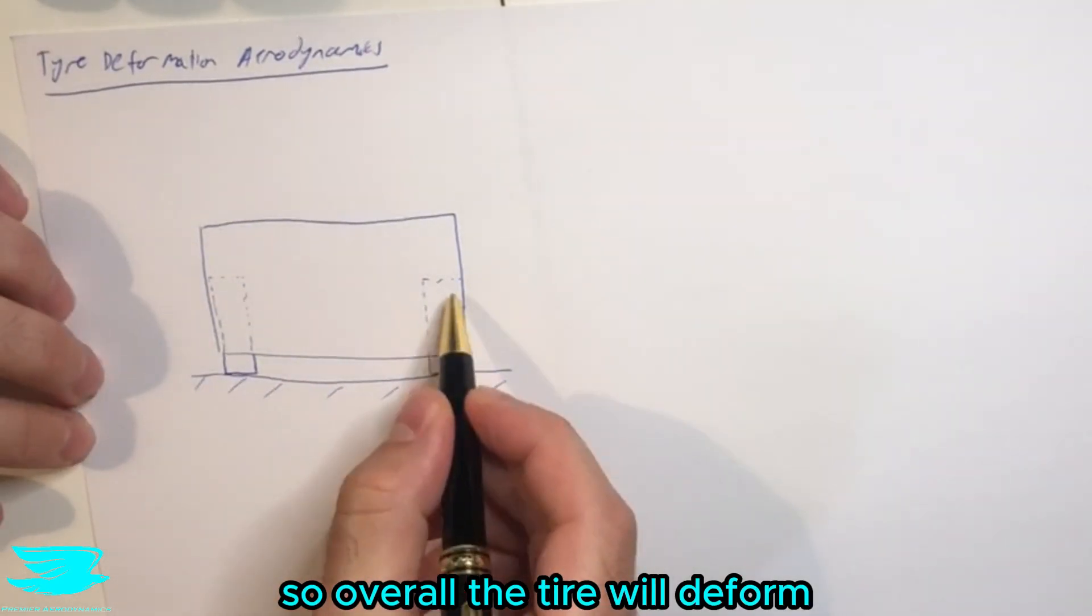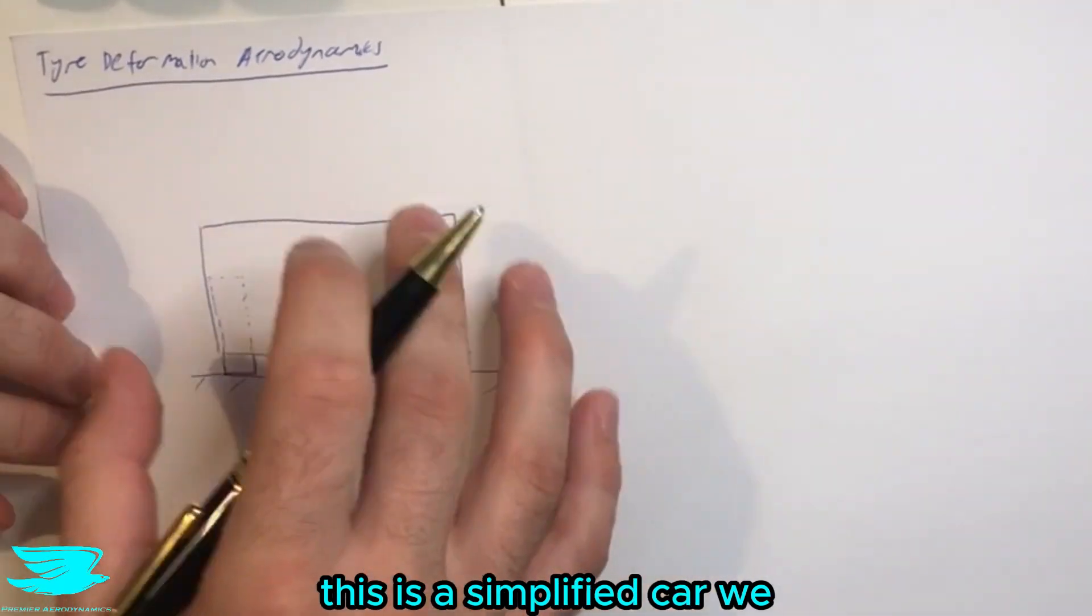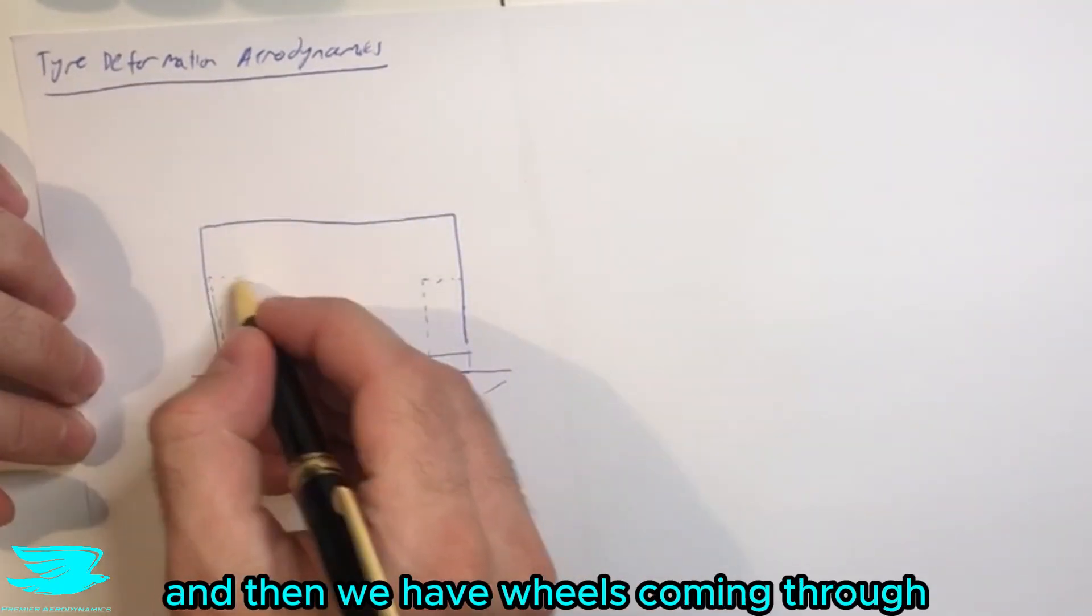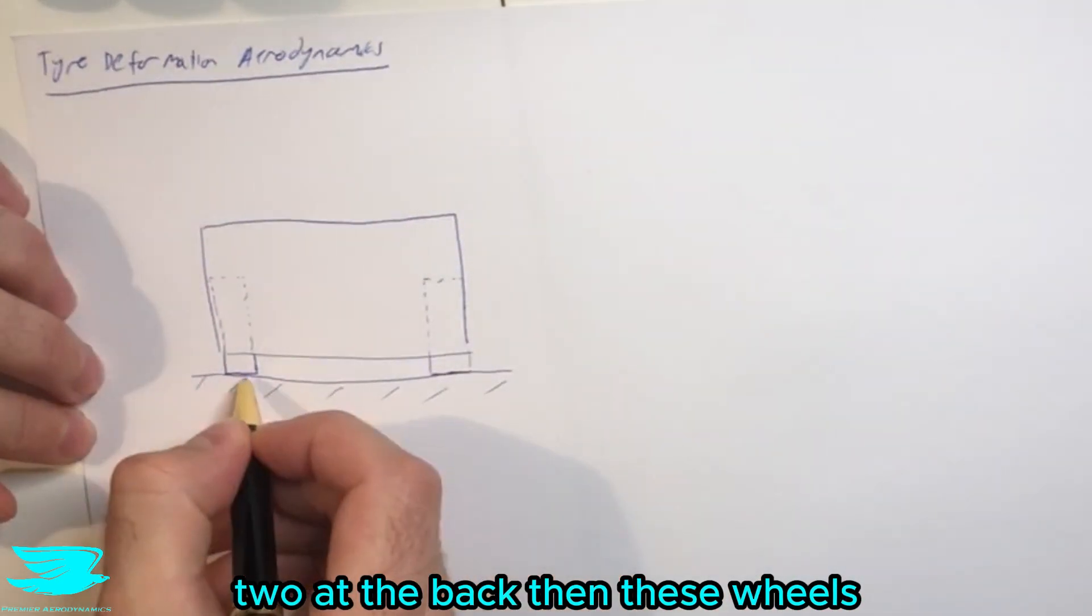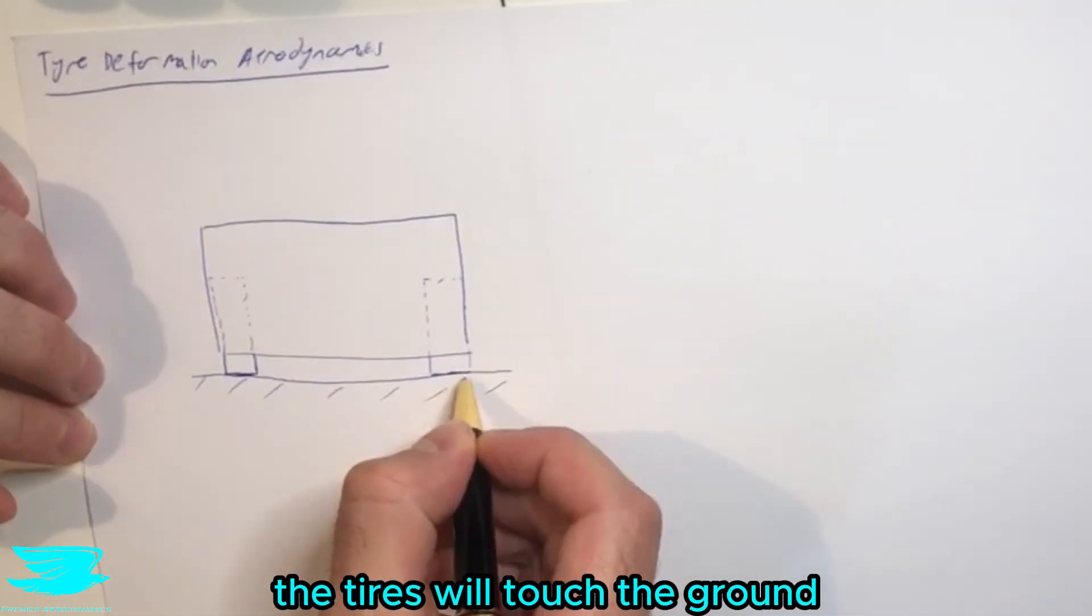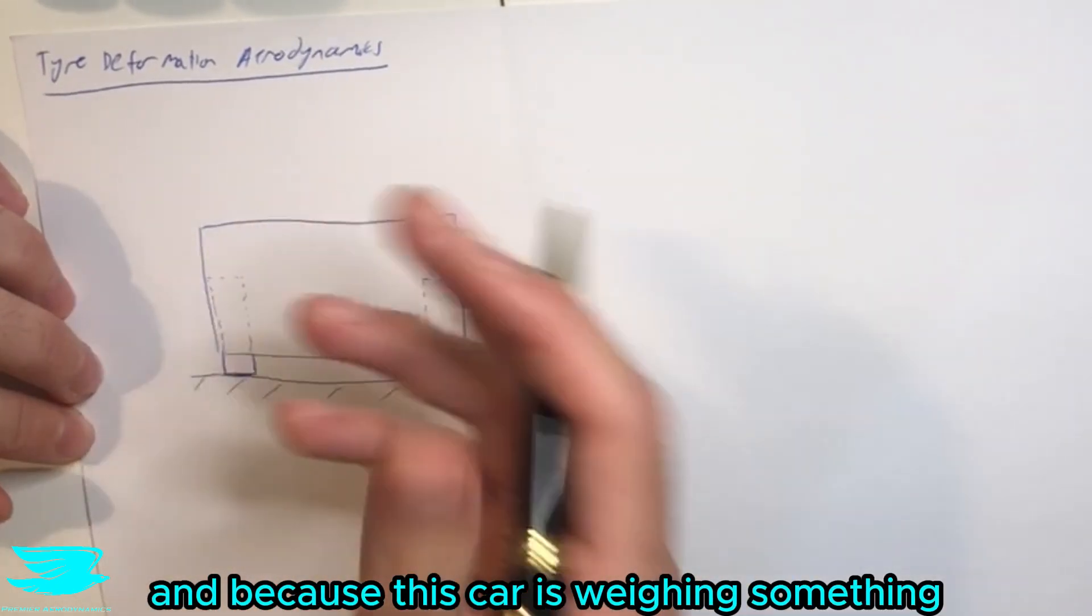Overall, the tire will deform. If we have a front-on view of a car, this is a simplified car where we have just a regular box and then we have wheels coming through. There's obviously four wheels, toward the front and toward the back. Then these wheels, the tires, will touch the ground.